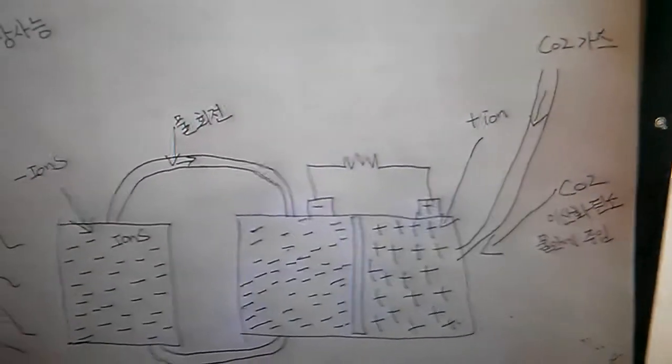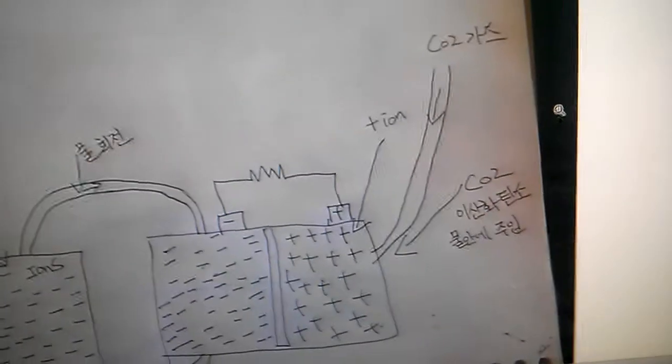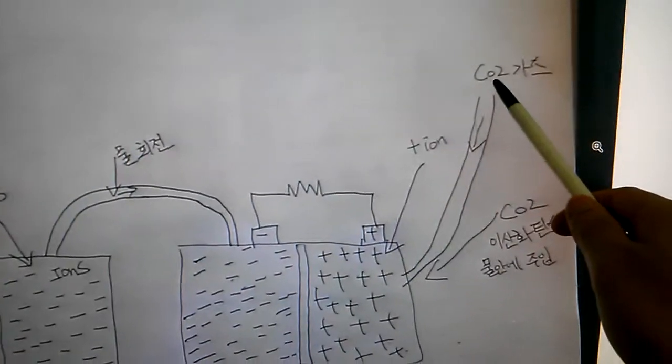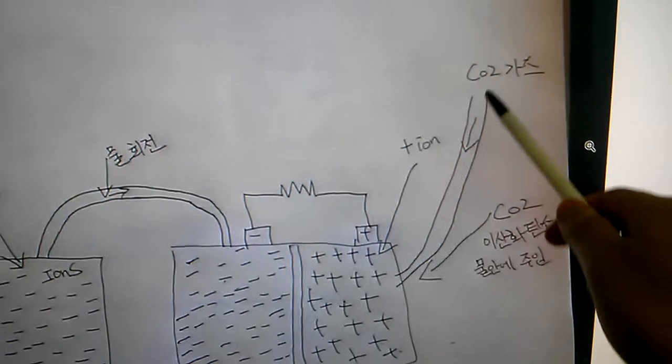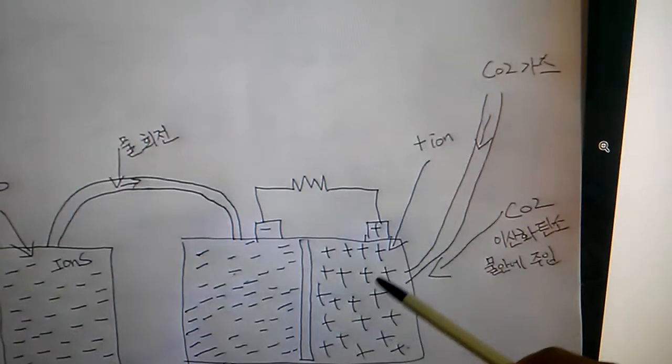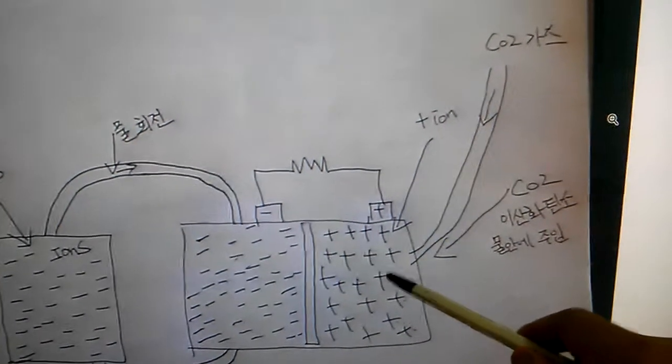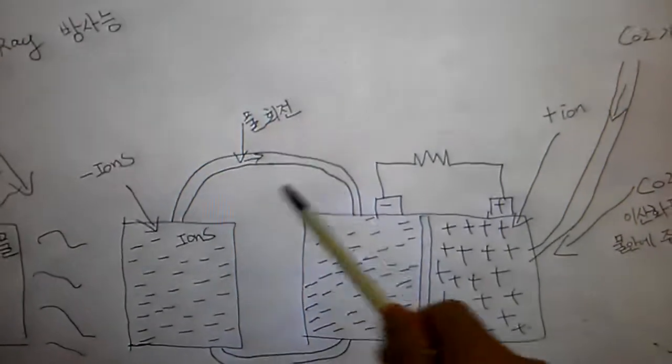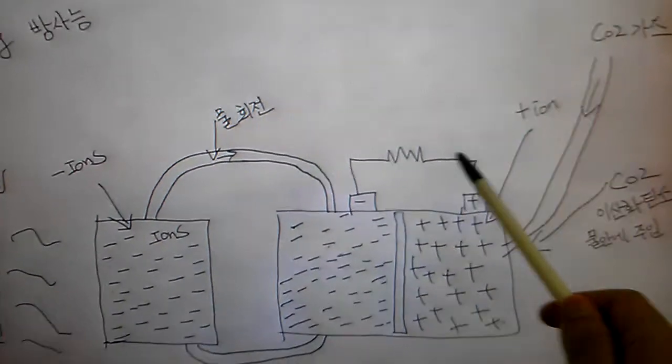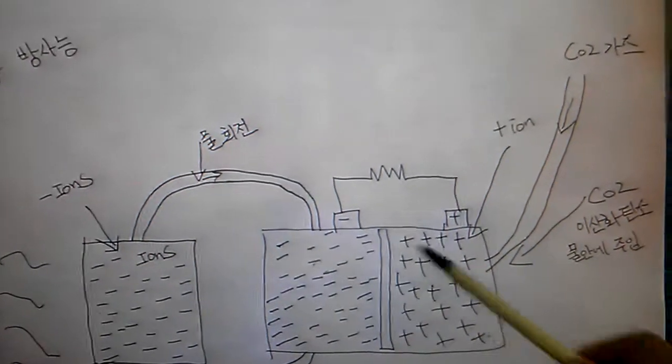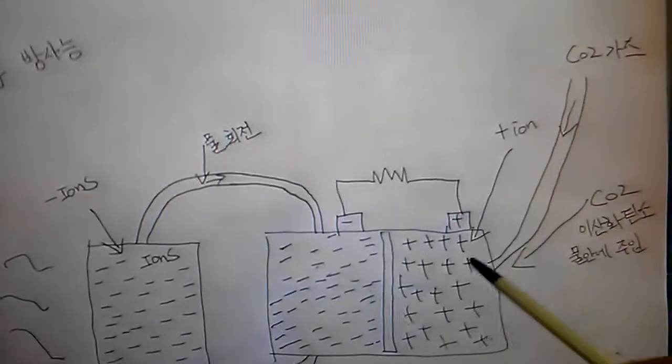Now we need positive ions. The positive ions normally come from carbon dioxide, CO2 gas. So if we put CO2 gas into water, the water turns into positive ions. So we have negative ions and positive ions, and if you put them in a battery, they do the chemical reaction.